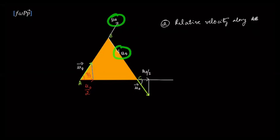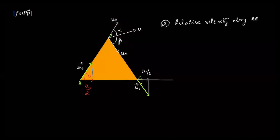These two components are the components of the velocity of vertex B. Let the actual velocity of B be u at angles α and β to the two directions. The component of u along AB and along BC must both equal u0, so α must equal β, meaning the velocity u must be horizontal. Once it is horizontal, the angle to AB is 60 degrees, so u = u0/cos 60 = 2u0. That gives the direction and magnitude of the velocity of vertex B.